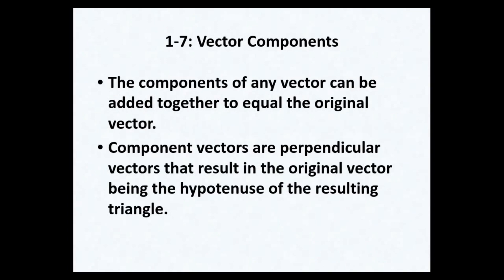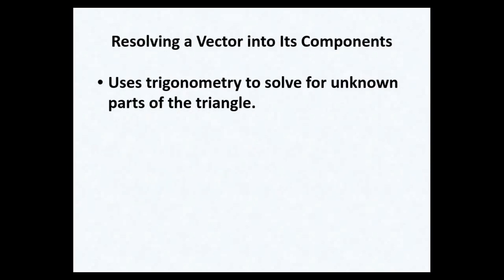Now we'll look at vector components. The components of a vector can be broken down and added together. Typically you will be given the resultant, which is the hypotenuse of the triangle, and asked to find the sides — the two legs. We'll use sine, cosine, and tangent to find those sides, since we'll be given a hypotenuse and an angle.